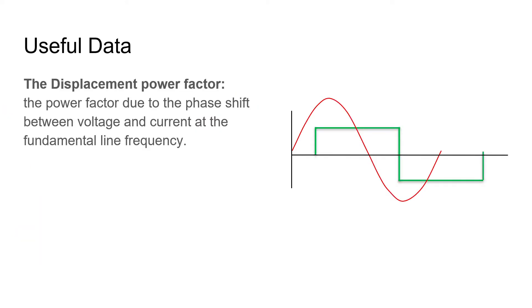The displacement power factor. It is defined as the power factor due to the phase shift between the voltage and the current at the fundamental line frequency. Mathematically, it is cos of the distance in degrees from the zero crossing of the voltage and the current wave. That is, cos of alpha.